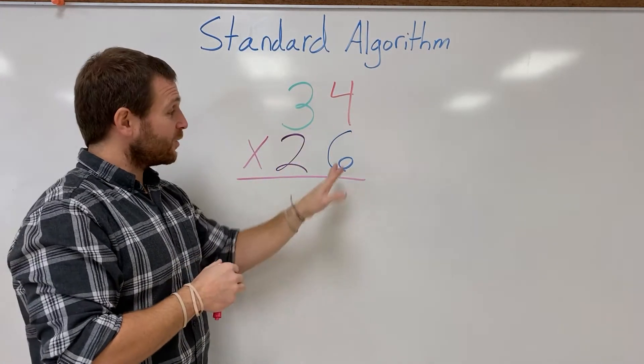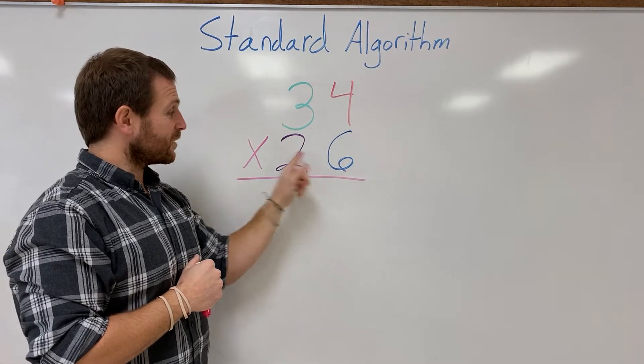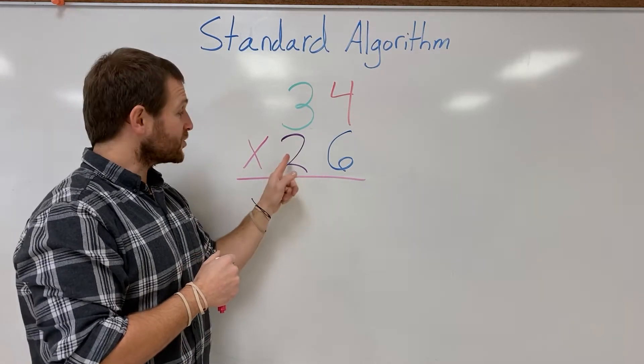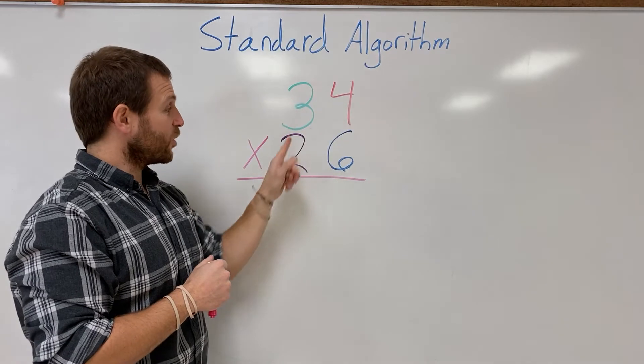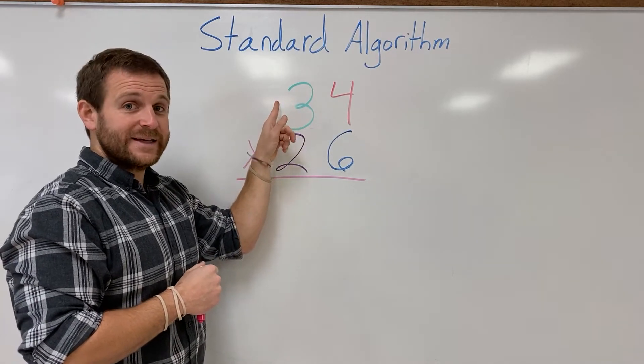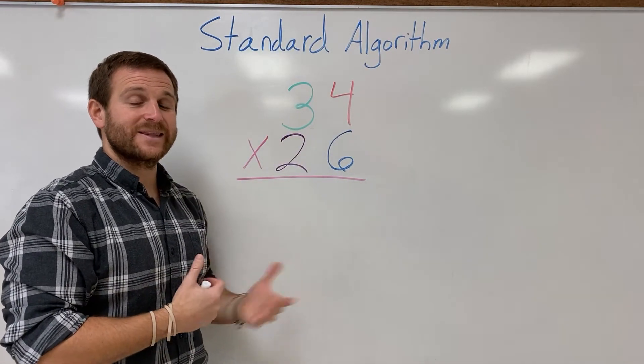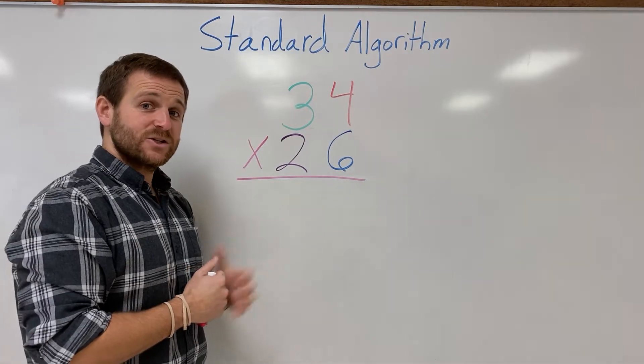Once we're done with that, we've finished our 6 and we can move on to our 20. We'll then multiply our 20 by our 4 and our 20 by our 30 and you get our two partial products that we can then add up to complete this. So let's go ahead and get started.